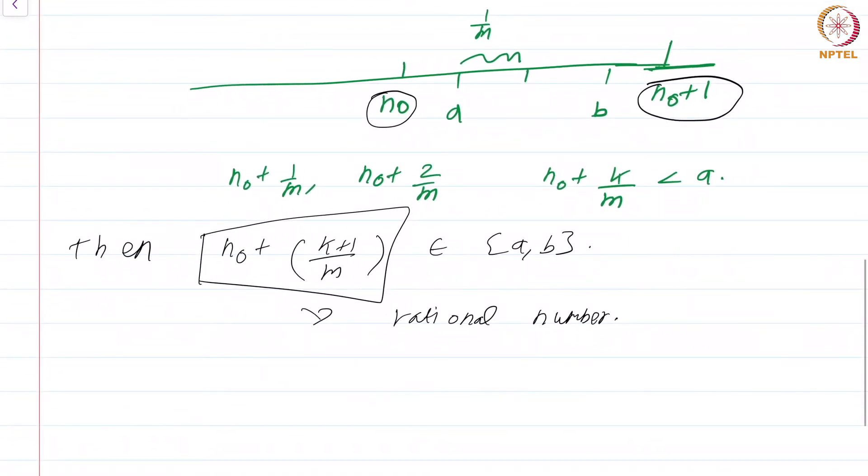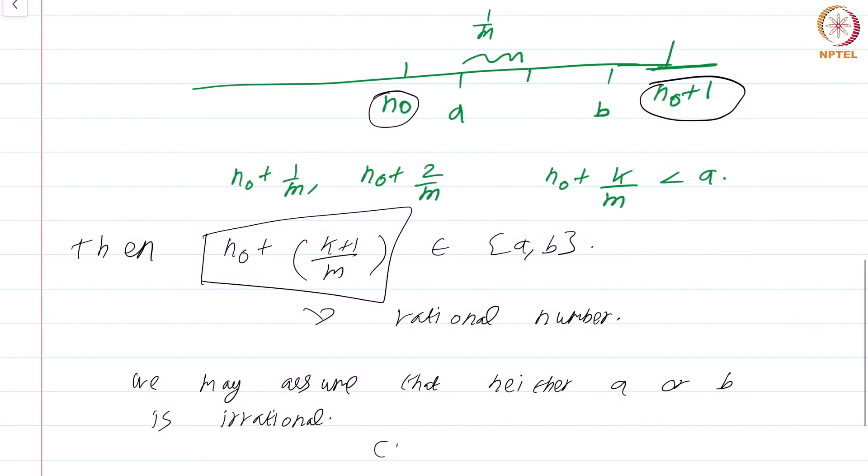What about the irrational case? That is even simpler. We may assume that neither a or b is irrational, for the same reasons that we made an analogous assumption. Then c, which is defined to be (a+b)/√2, works. Why? I leave it to you to check why this works, it is rather straightforward.